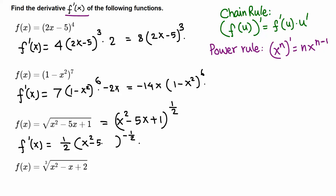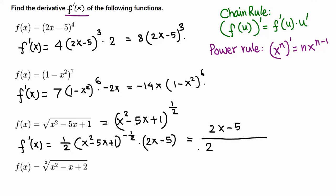Then multiply by the derivative of the inner function (x² - 5x + 1): derivative of x² is 2x, minus derivative of 5x is 5, plus derivative of 1 is 0. So we get (1/2)(x² - 5x + 1)^(−1/2) times (2x - 5). To simplify the negative exponent, bring it to the bottom: the result is (2x - 5) on top, all over 2√(x² - 5x + 1). For Math 132, if the question says do not simplify, you may leave it in the unsimplified form.